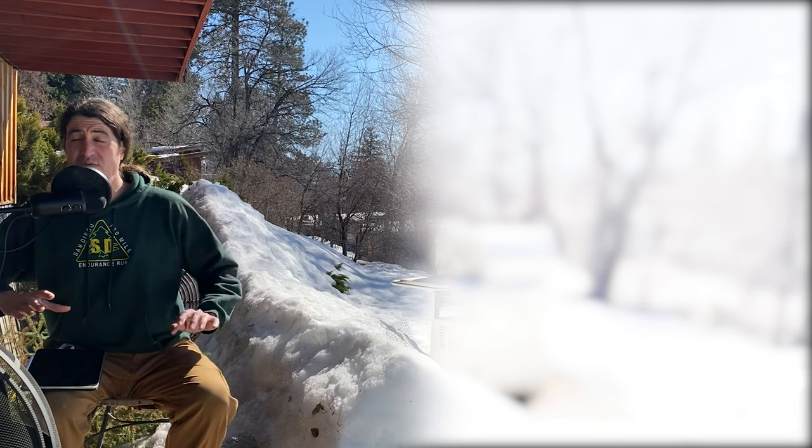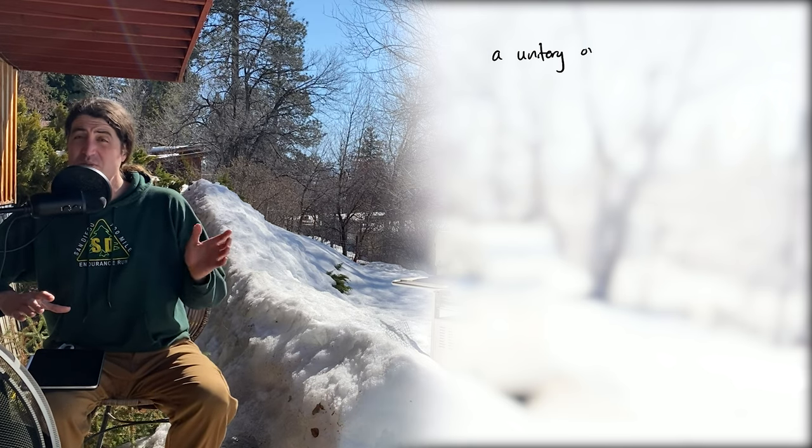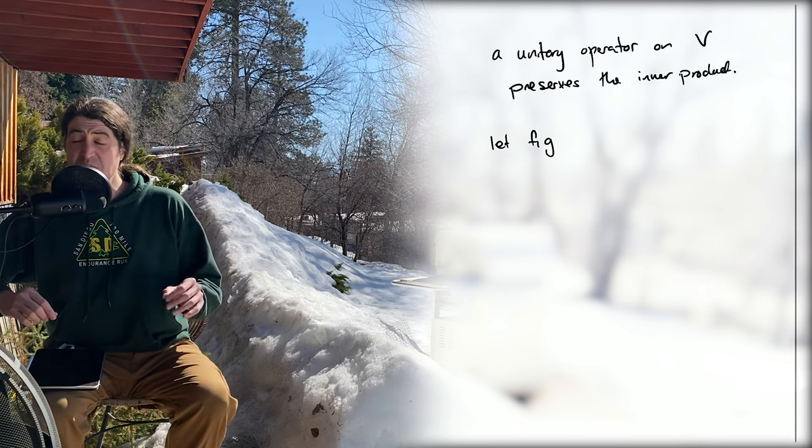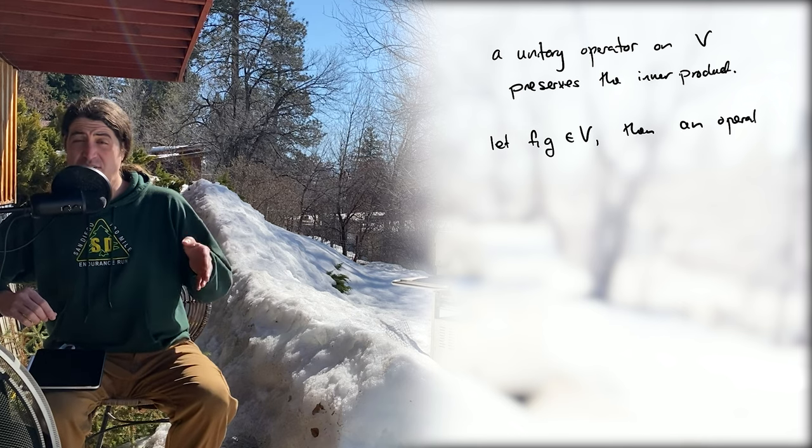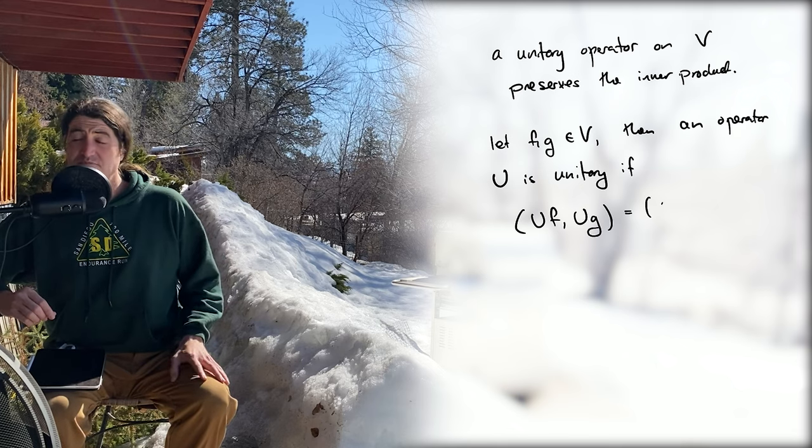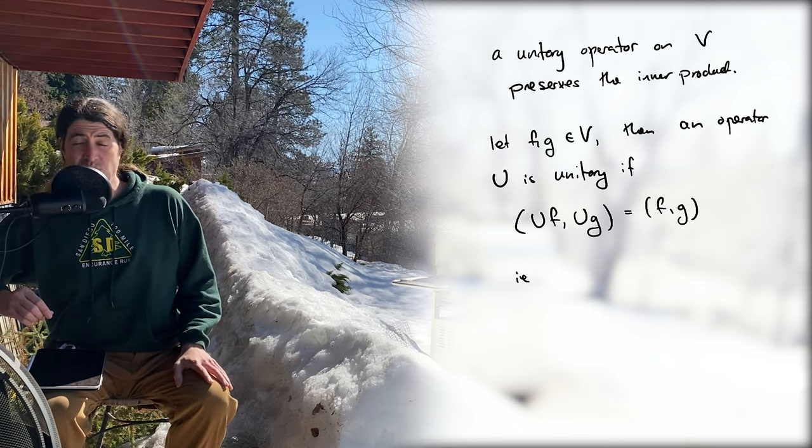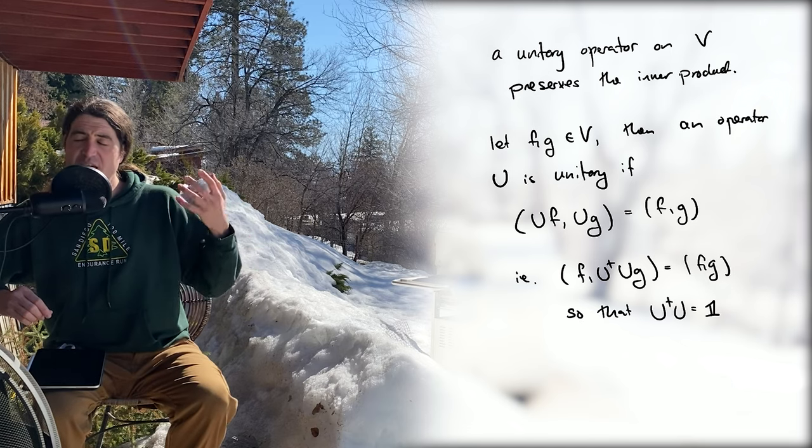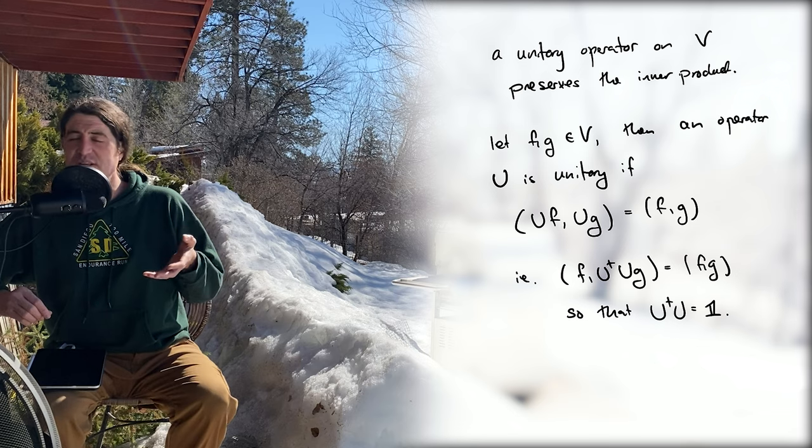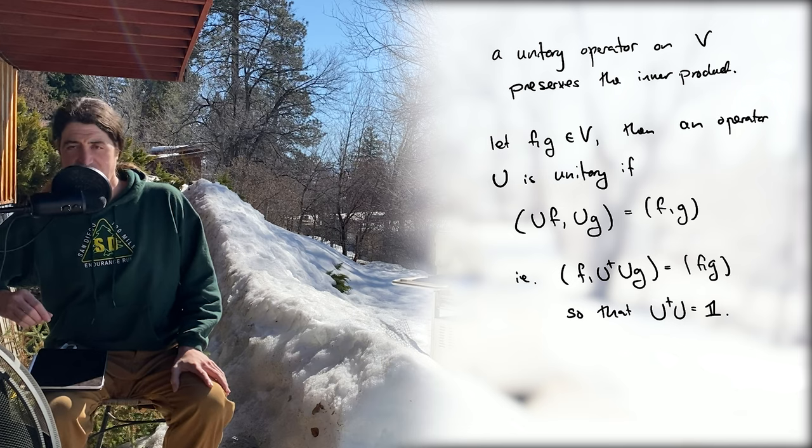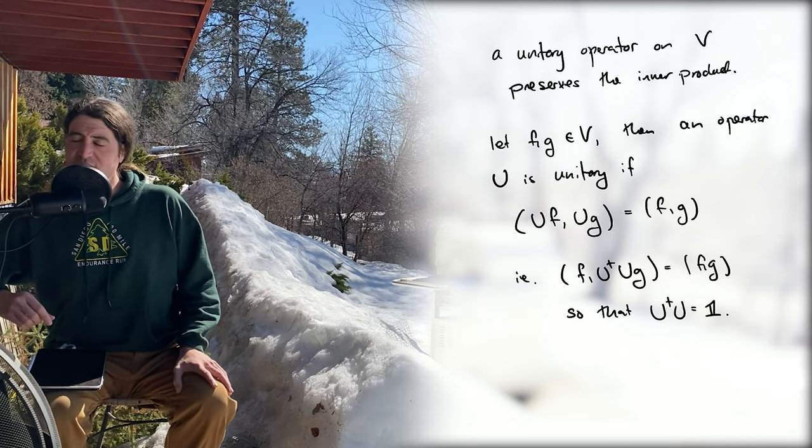So first a unitary operator on V, just any operator on V that you like that happens to be unitary is one that preserves this inner product. So what I mean by that is, let f and g be members of V, then the inner product of U(f) with U(g) must equal the inner product of f with g. Following the rules for the adjoint, we simply pull U from one side of the inner product to the other. So we see that f with U dagger U acting on g must equal f with g, which means that U dagger U is equal to one, which is our defining relationship for a unitary matrix, a unitary operator in this case on V.